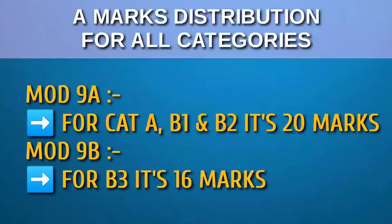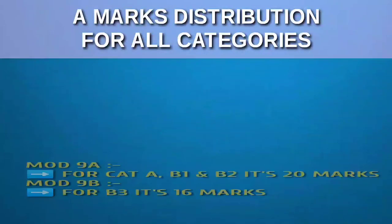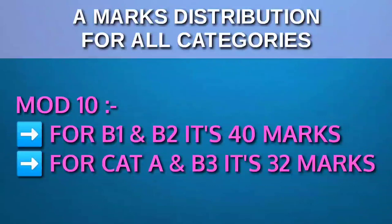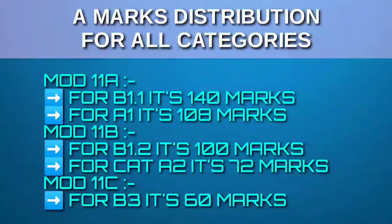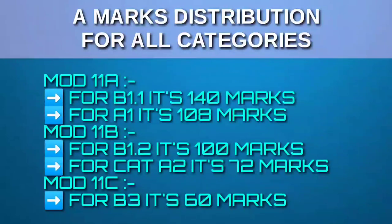Module 9A is of 20 marks for category A, B1 and B2, while 9B is of 16 marks for B3. Module 10 is of 40 marks for both category B1 and B2, and for category A and B3 it's 32 marks. Module 11A for B1.1 is 140 marks and for A1 it's 108. 11B for B1.2 is 100 marks and for A2 it's 72 marks. 11C for B3 is 60 marks only.